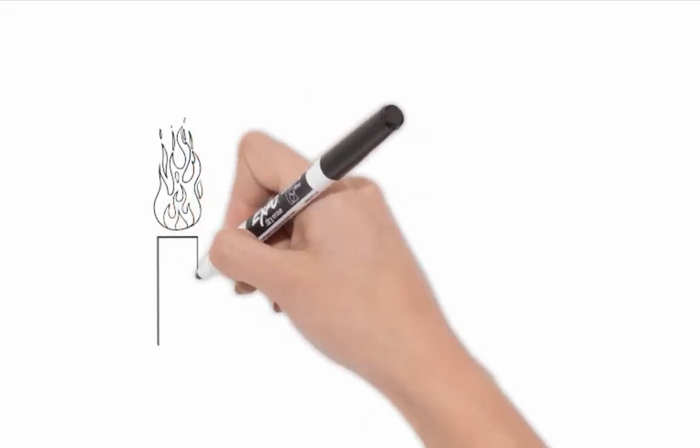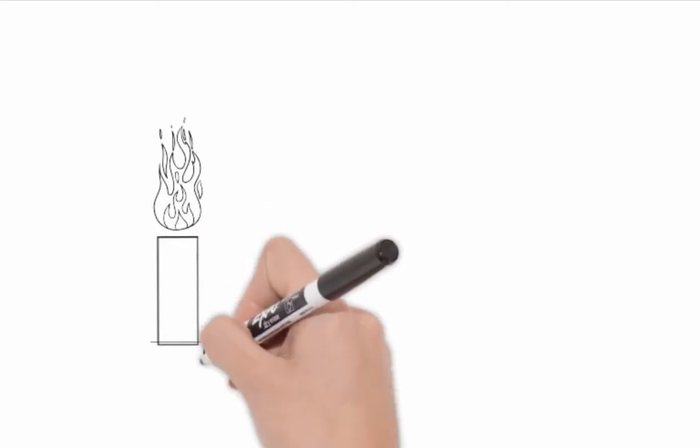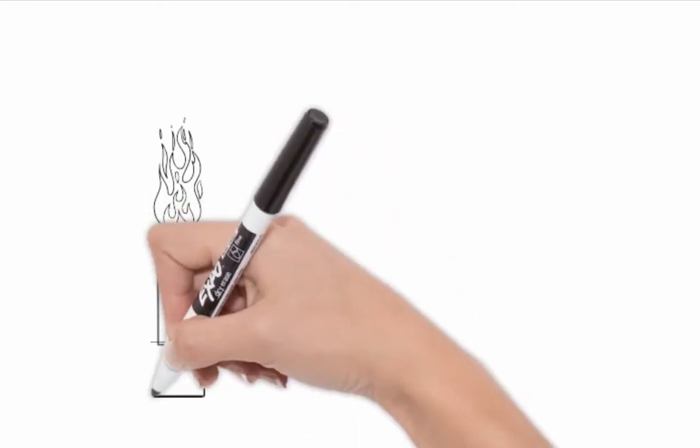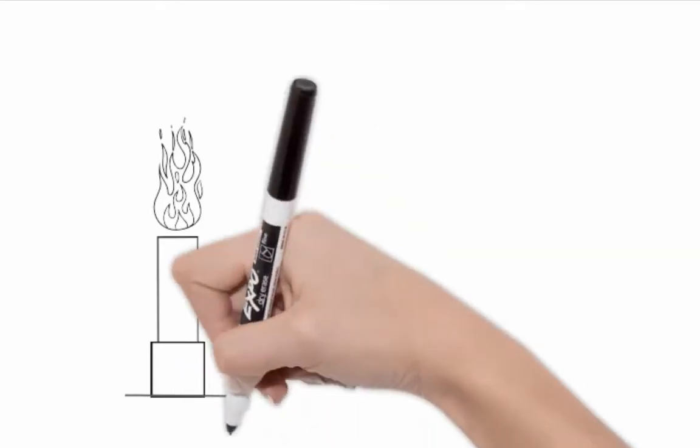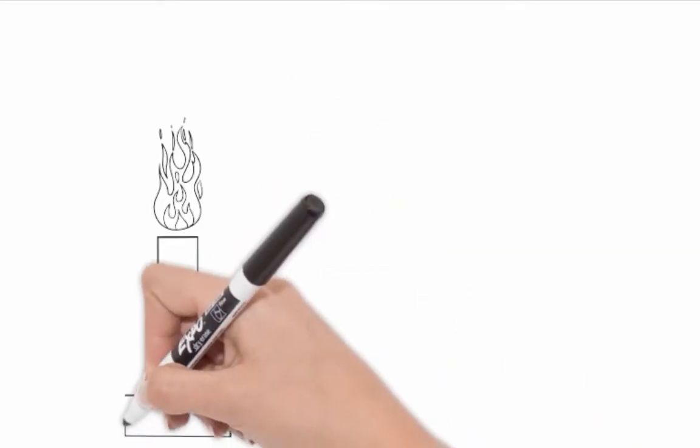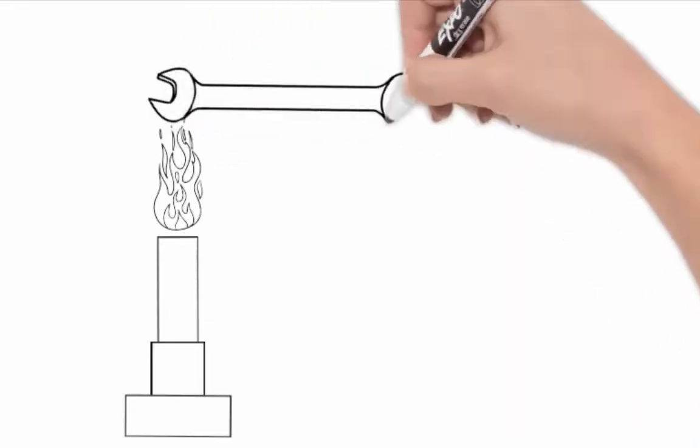If we imagine we have a Bunsen burner and we're heating up the end of something metal like a spanner, if we were to hold the other end then eventually we would feel the spanner get quite hot and if we hold it for long enough in that flame then we would probably be unable to keep holding it.